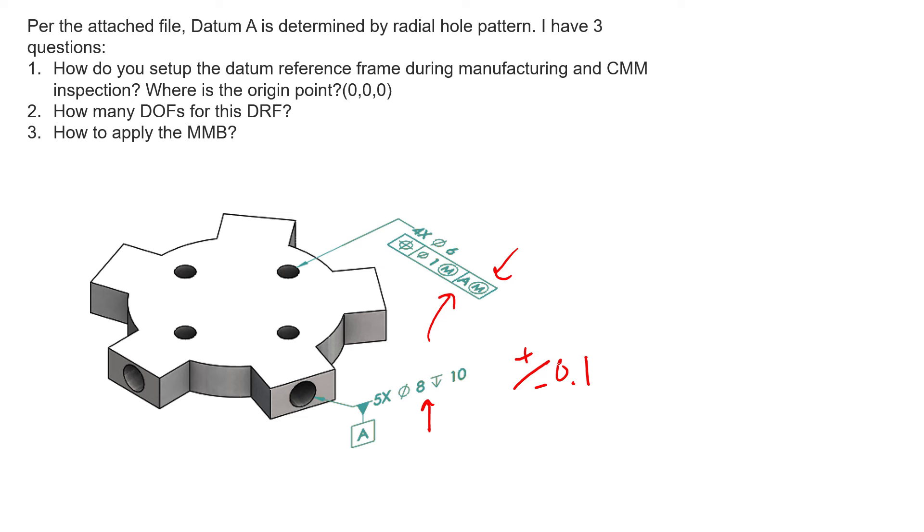For the first question, how do you set up the datum reference frame during manufacturing? The short answer is however you would like. You can set your zeros of your machine—if this is a mill or a lathe—wherever you want. There's no rules for how you do this. But it's important for the interpreter, the manufacturing engineer, the CNC operator, the CNC programmer, anybody involved in creating this product, that they understand.